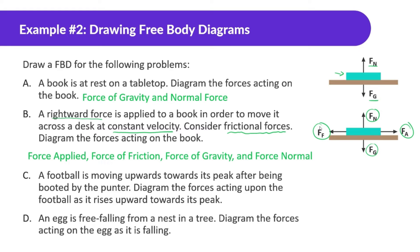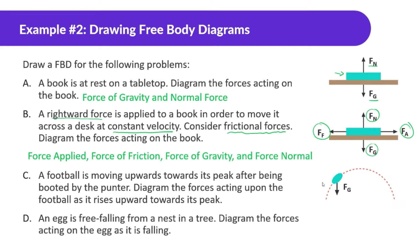A football is moving upward toward its peak after being booted by the punter — diagram the forces acting on it as it rises. This is a little tricky. You might think there should be a force applied going upward, but it's true that it did get hit right at the very beginning. However, it wasn't being hit while it's going toward the air — as soon as it was hit, there was no longer a force applied. While it's going up, there's only a force of gravity on it.